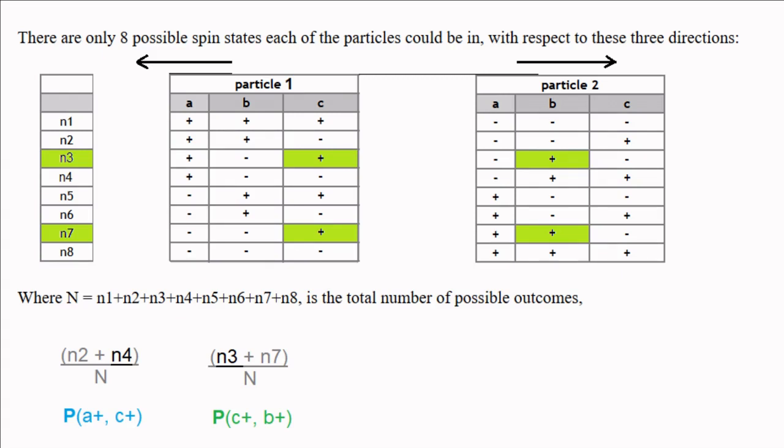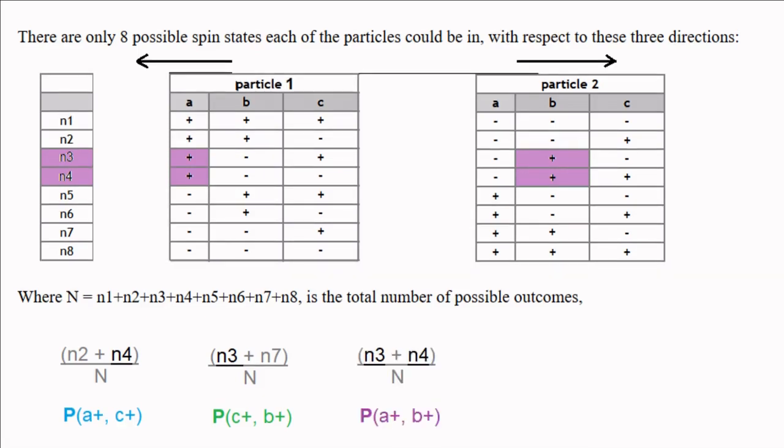And the number of times that spin 1 is plus along direction a, and spin 2 is plus along direction b, equals n3 plus n4. Therefore the probability of particle 1 being plus along a and minus along b is equal to n3 plus n4 over n.